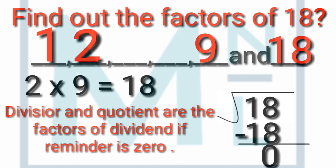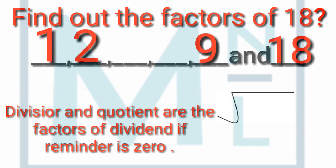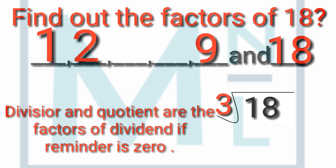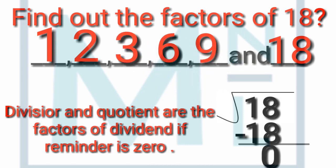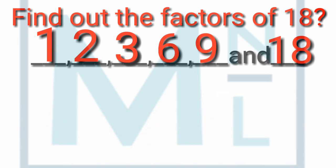Similarly, we will verify 3 — whether 3 is a factor of 18 or not. We divide 18 by 3. 3 times 6 is 18, and after deduction the remainder is 0. Since the remainder is 0, the divisor and quotient are factors of the dividend, meaning 3 and 6 are factors of 18. So the factors of 18 are: 1, 2, 3, 6, 9, and 18.